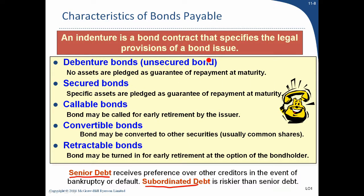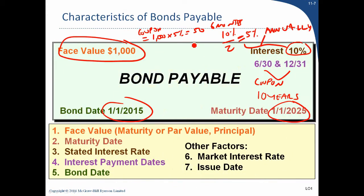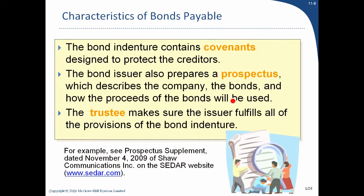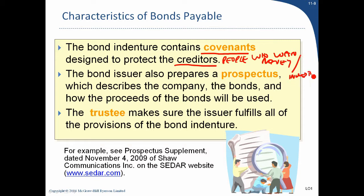The bond indenture is just the contract that contains all the information: issuance date, maturity date, coupon payments, face value. It also includes covenants designed to protect creditors — the people who loan money or the investors. A covenant might be: you need to maintain a quick ratio greater than one, or you cannot issue other bonds. Covenants are legally and contractually specified promises to do or not do something — there are positive and negative covenants.